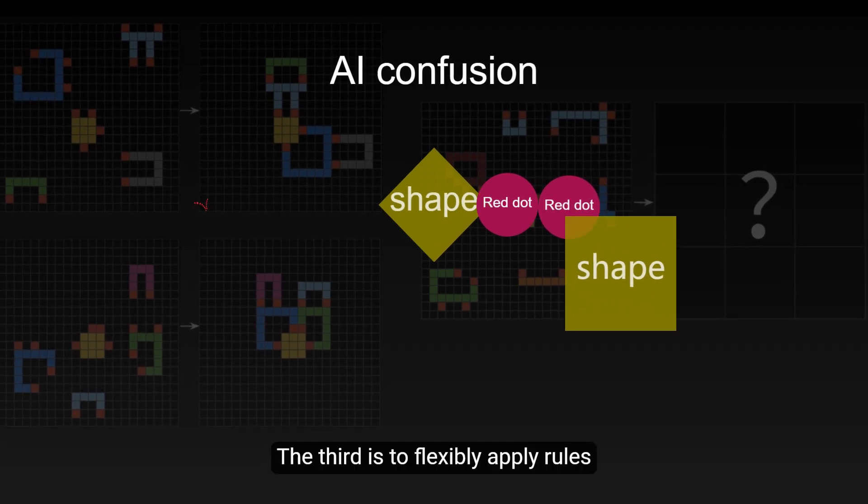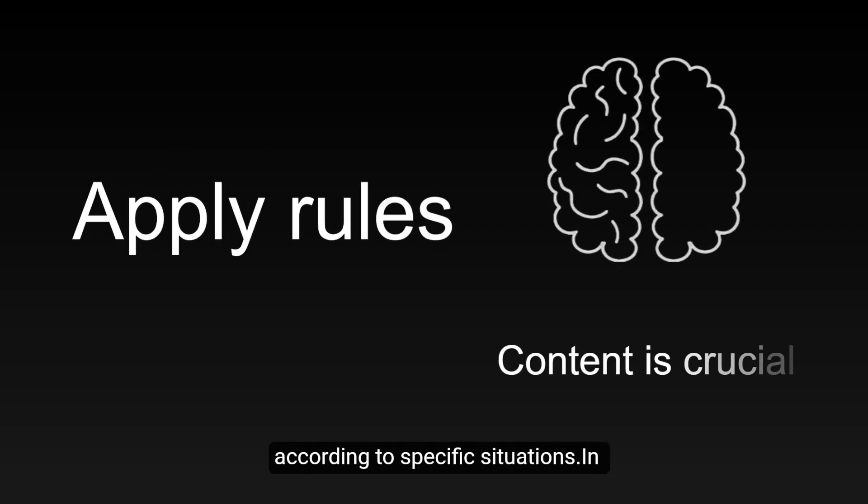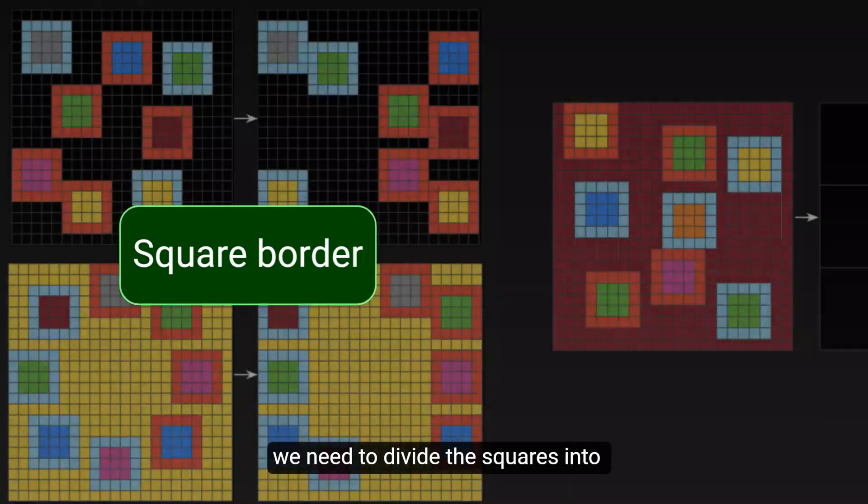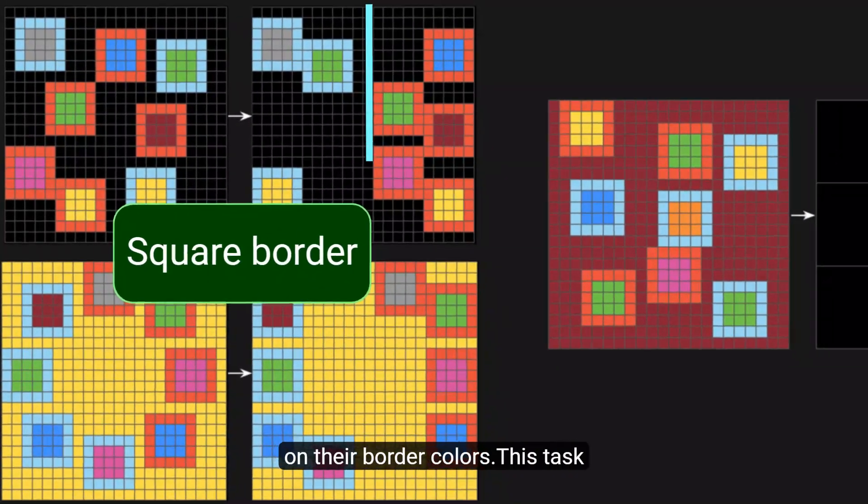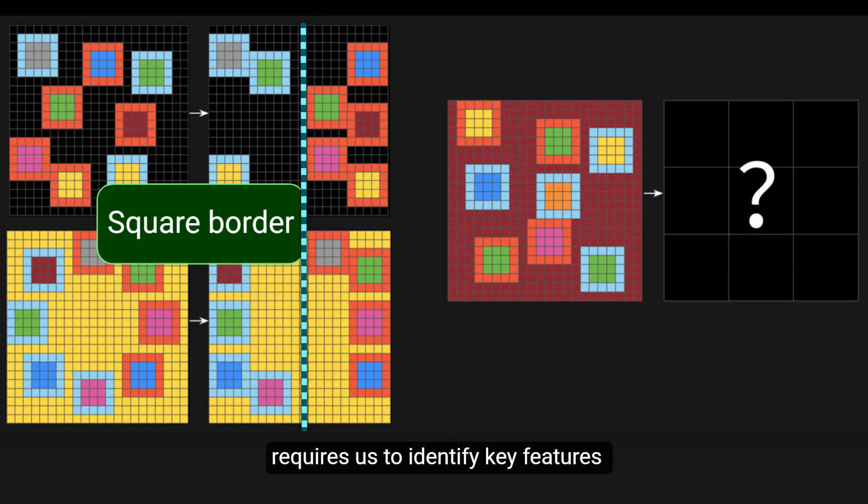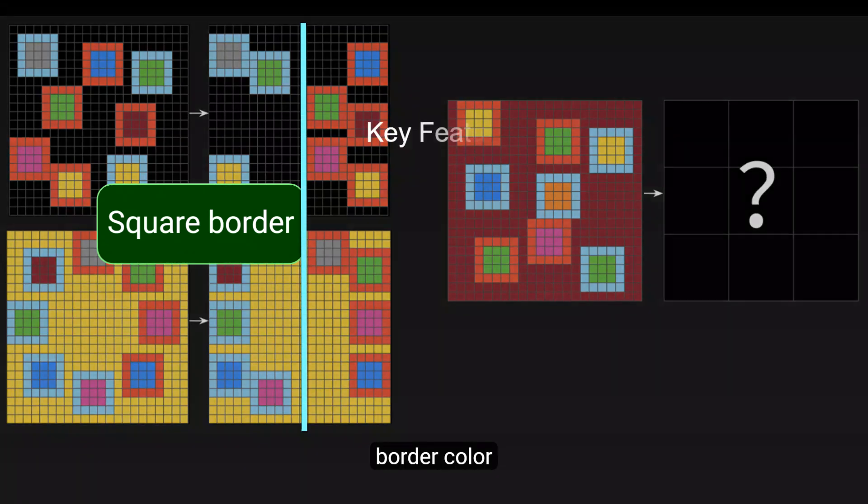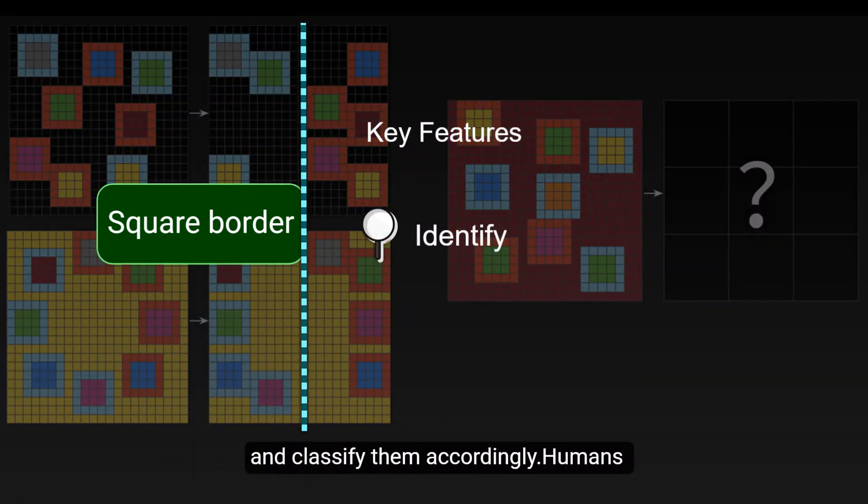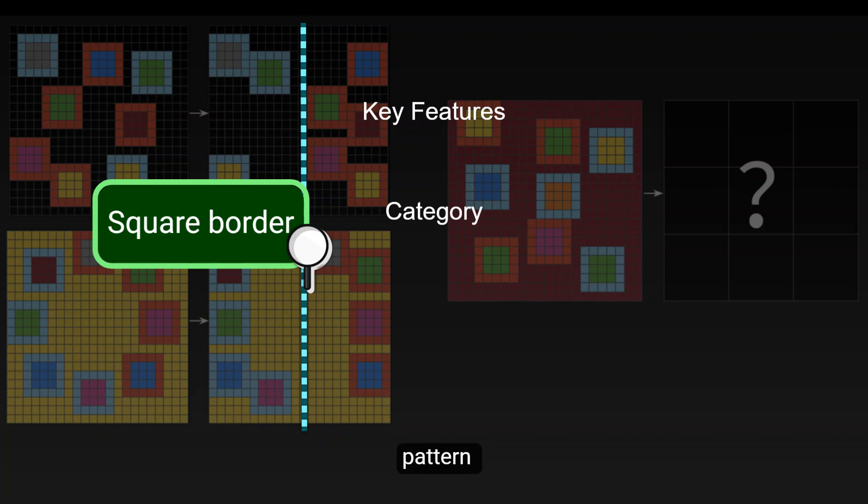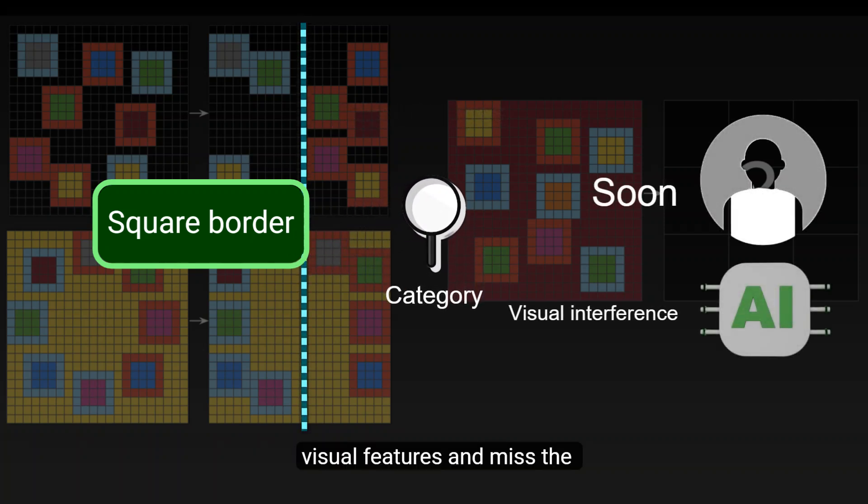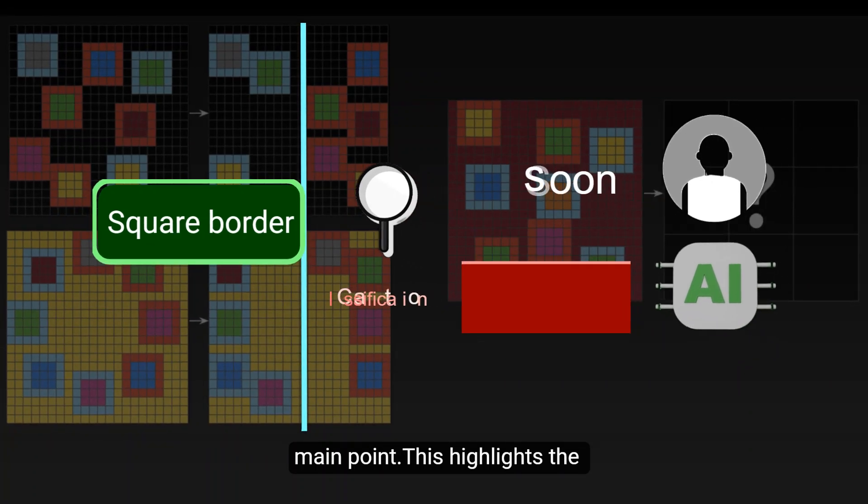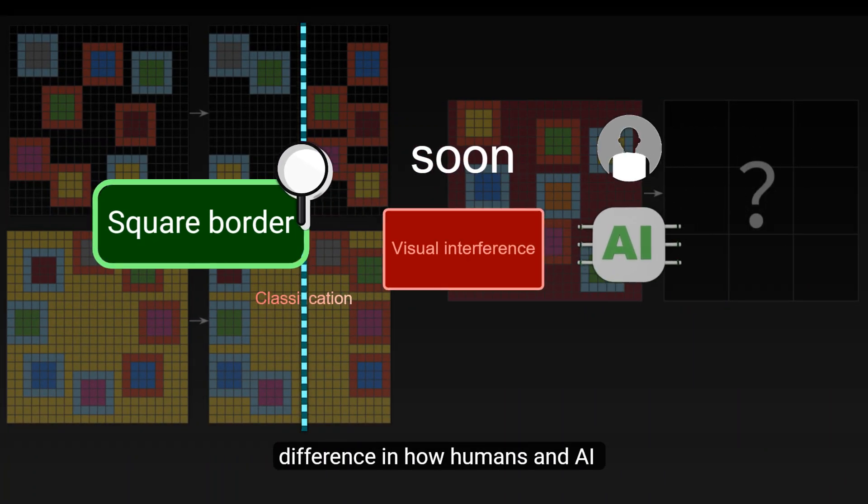The third is to flexibly apply rules according to specific situations. In a task, we need to divide the squares into left and right groups based on their border colors. This task requires us to identify key features, border color, and classify them accordingly. Humans can quickly recognize this pattern, but AI might get distracted by other visual features and miss the main point. This highlights the difference in how humans and AI process visual information.